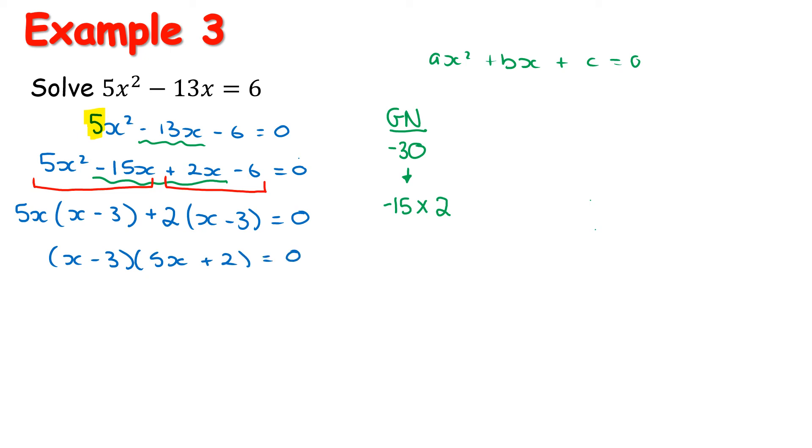Now, by the zero product property, we know that x - 3 = 0 or 5x + 2 = 0. Now, the x - 3 is nice and straightforward. We will add a 3 to both sides, which will end up giving us x = 3.